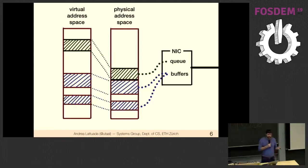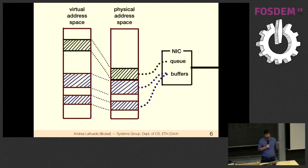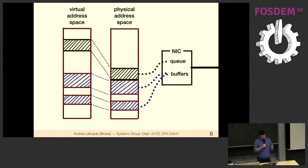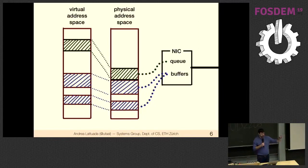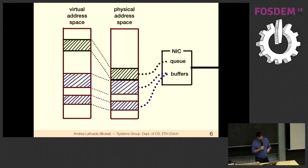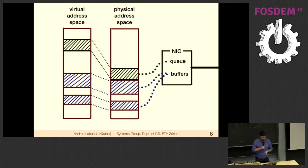Of course, computers have separate virtual and physical address spaces — every process has its own virtual address space mapped to physical RAM. For the NIC to perform these operations, it needs to know this mapping. When setting up buffers with an RDMA-enabled NIC, you must tell it: here's a virtual address, here's the corresponding physical RAM address — go read and write it whenever you want.